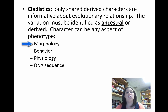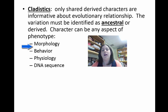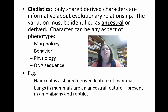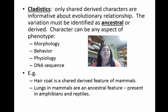These characteristics can come from a number of categories: morphology, which means structure and how it actually looks; behavior, how they act; physiology, how something functions — like how the brain works, not necessarily its structure; or DNA sequence. In today's lab we're going to focus more on morphology. For example, a hair coat is a shared derived characteristic of all mammals — it's new to them. Whereas lungs are an ancestral trait when comparing mammals with amphibians and reptiles, since all of them have lungs, but reptiles and amphibians don't have hair.